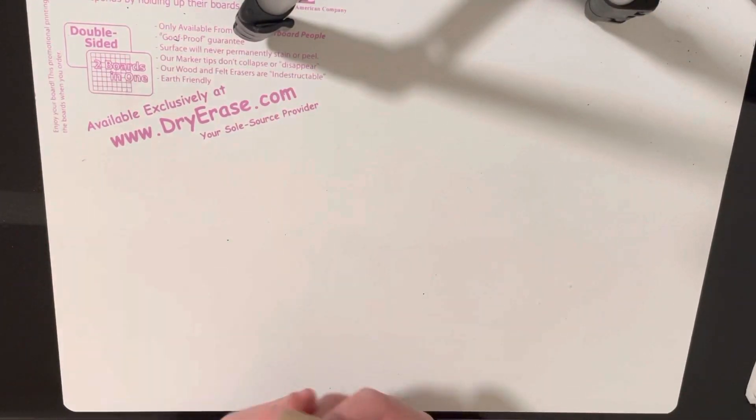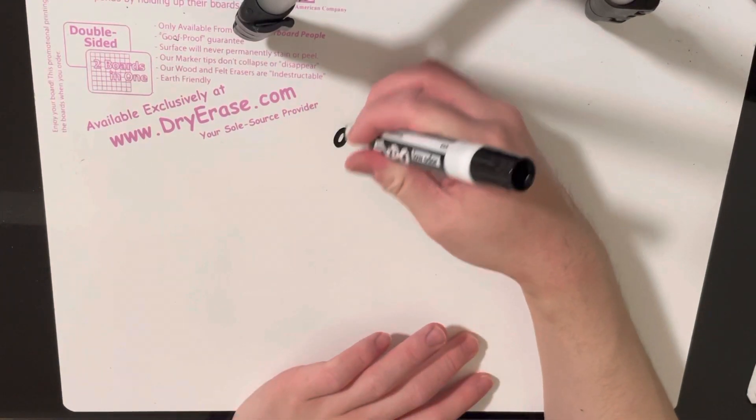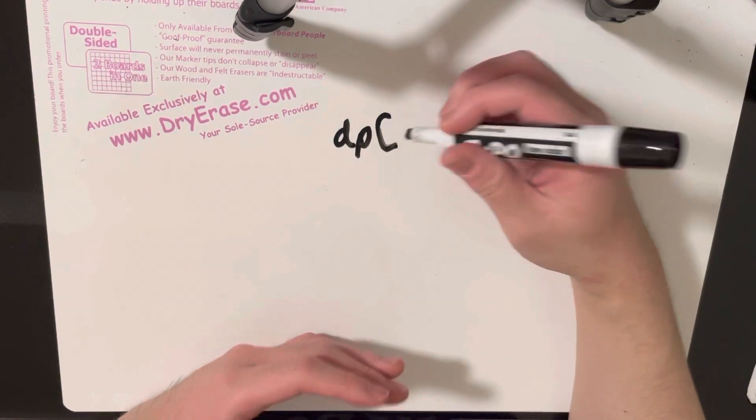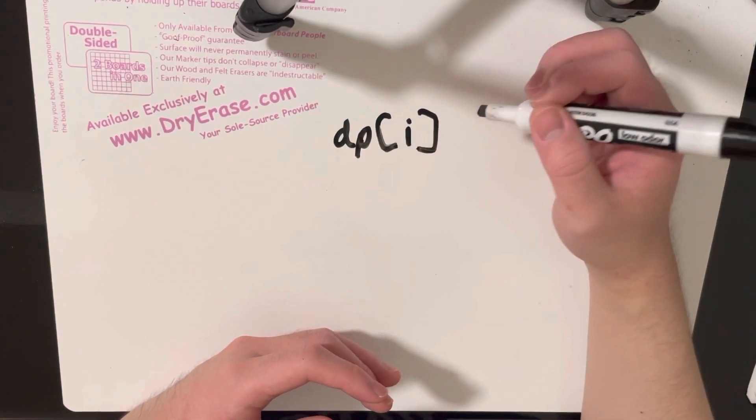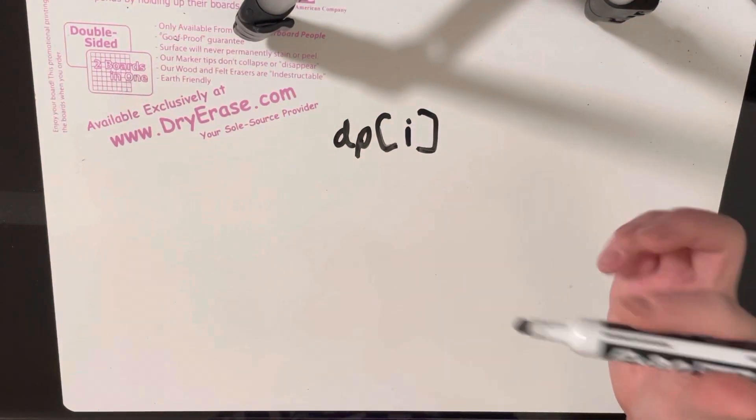The second thing to notice is, okay, well, if I know an n squared solution exists, let's try a DP solution. Now, if you're familiar with DP, one of the first traits you could say is which index are we currently on? In other words, what is a prefix of this array that we're currently considering? And so this could be our first attribute of DP.